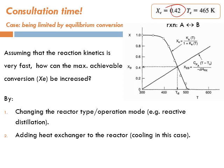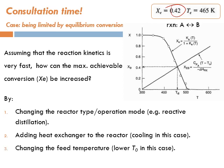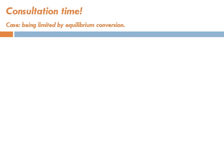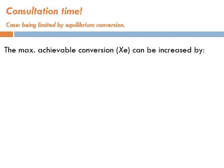Another option is adding a heat exchanger to the reactor. In this case we want to cool the reactor, because the reaction is exothermic — cooling the reaction mixture will shift the equilibrium forward. A third solution is changing the feed temperature: if we lower the feed temperature, we'll have a lower temperature inside the reactor, and a lower operating temperature means higher equilibrium conversion. So the conversion is limited by thermodynamics.